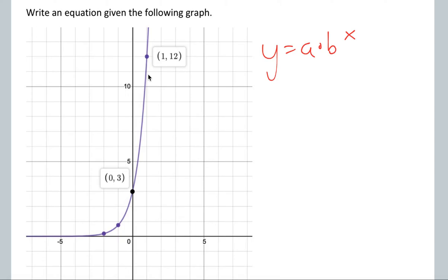Our a value, the initial value, looks to be 3, because that's when x is equal to 0. That's our starting point when x is 0. So y equals 3 times b to the x.